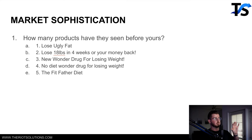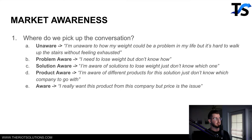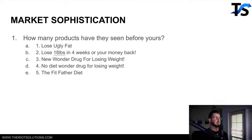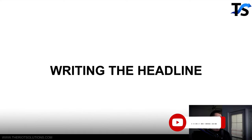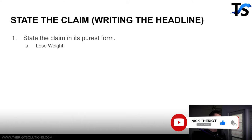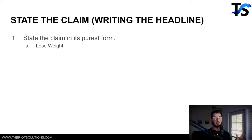Now that you have desire calculated, feature into benefit calculated, market awareness calculated, and market sophistication calculated — all through market research — you pull it all together and can actually write the hook or headline. The first and easiest way to do this is by simply stating the claim in its purest form. For example, if you have a weight loss product: 'lose weight.' That's the claim. You take this product, you lose weight.